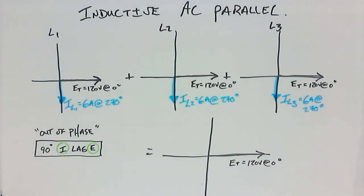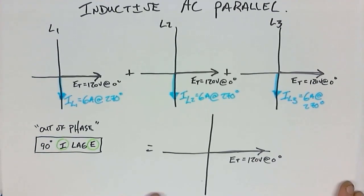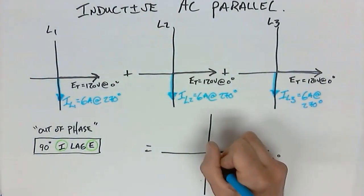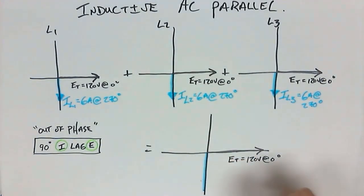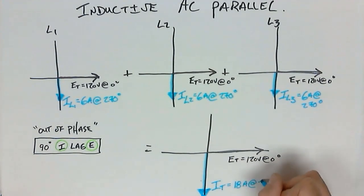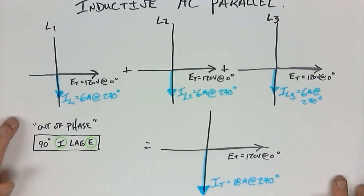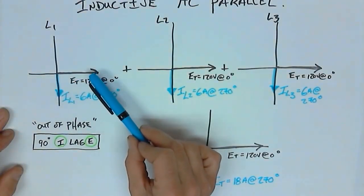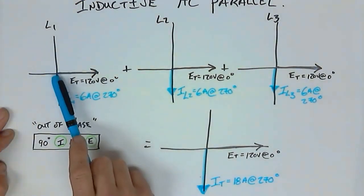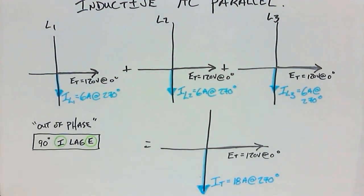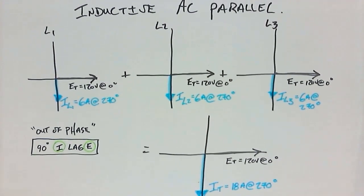Now we have all of these values sketched — the current is lagging the voltage, which is what we want to see in an inductive circuit. The total value of current, adding them all together, gives I total equaling 18 amps at 270 degrees. There are many similarities between AC series and AC parallel inductive circuits, but one major difference: the reference has changed, and because the reference has changed, where we place the inductive current also changes.